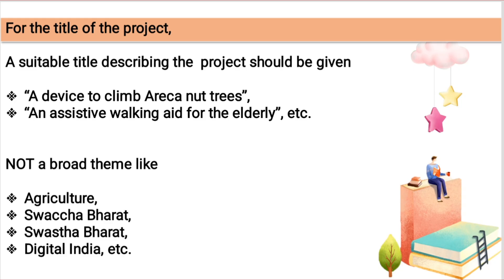A suitable title describing the project should be given. For example: 'A Device to Climb Tree' or 'An Assistive Walking Aid for the Elderly.' As you can see, these titles completely describe what the project is about. Now, titles you should NOT use are broad themes — for example: Agriculture, Swachh Bharat, Swasth Bharat, or Digital India.